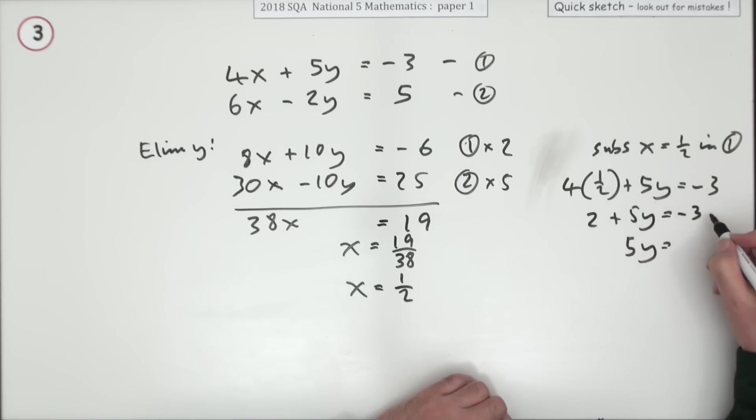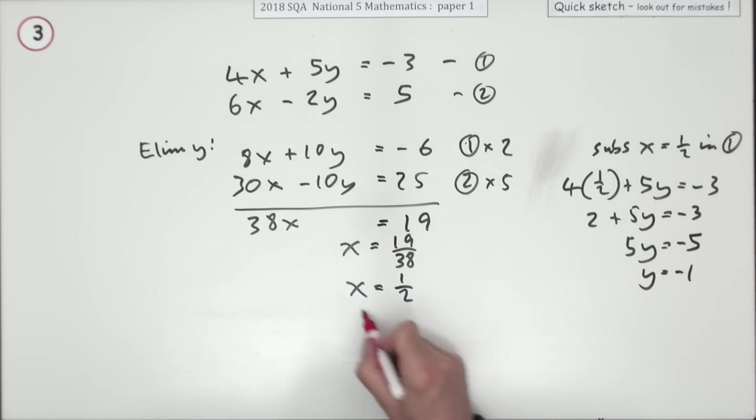Take the 2 across. Subtract 2, negative 5. Divide by the 5, negative 1. x is a half, y is negative 1.